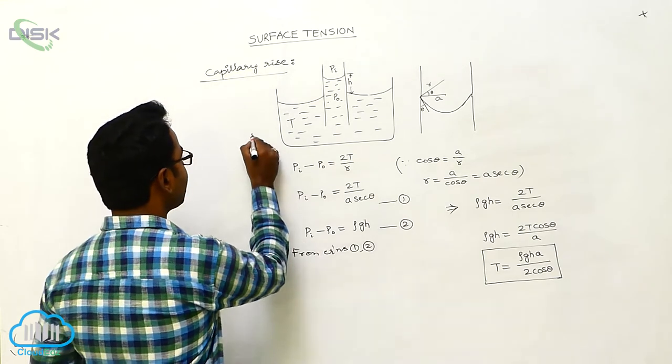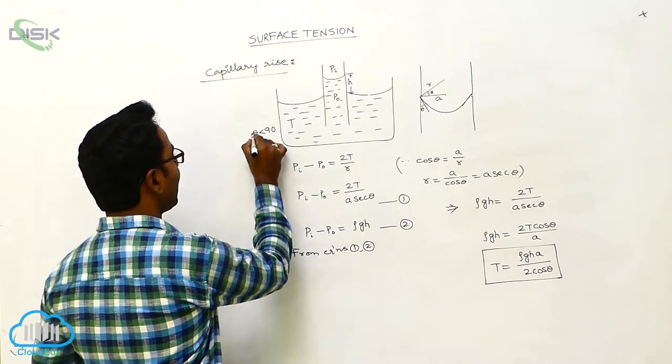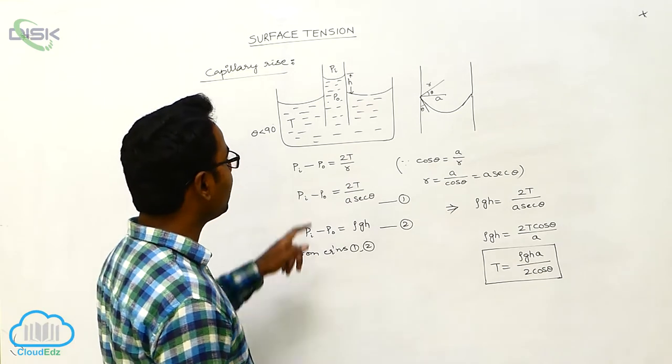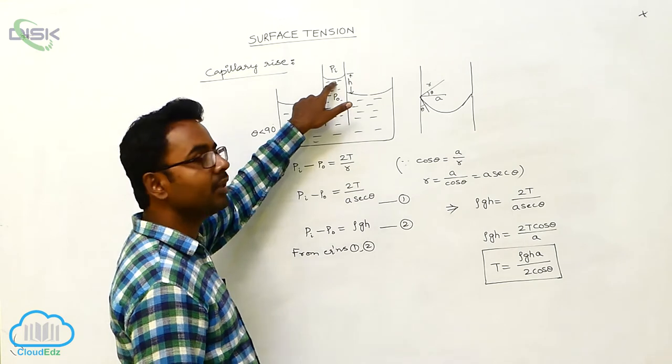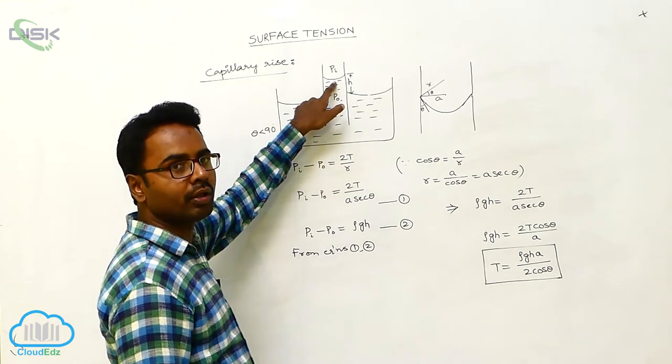Suppose if the angle of contact is less than 90 degrees, then in the capillary tube, the liquid level rises. If the liquid level rises and the angle of contact is less than 90 degrees, the shape of the meniscus is concave.